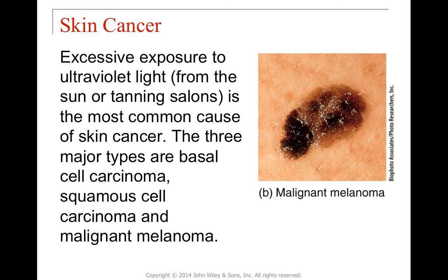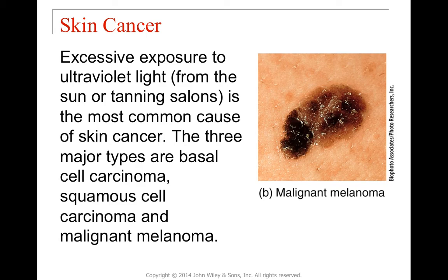Skin cancer can develop from exposure to UV light — from the sun, tanning salons, etc. — causing abnormal skin cells that grow faster than normal and can eventually metastasize via the bloodstream to secondary locations like bone. When caught early, survival rates are very good. The major types are basal cell carcinoma, squamous cell carcinoma, and malignant melanoma — the most dangerous form. The ABCs of checking moles include asymmetry, irregular borders, color changes, and sudden appearance.